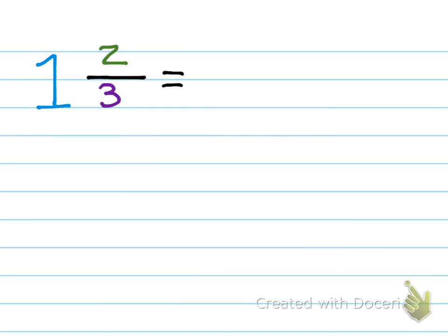So, today, we're learning how to take this mixed number, one and two-thirds, and change it into that improper fraction where the numerator is greater than the denominator.